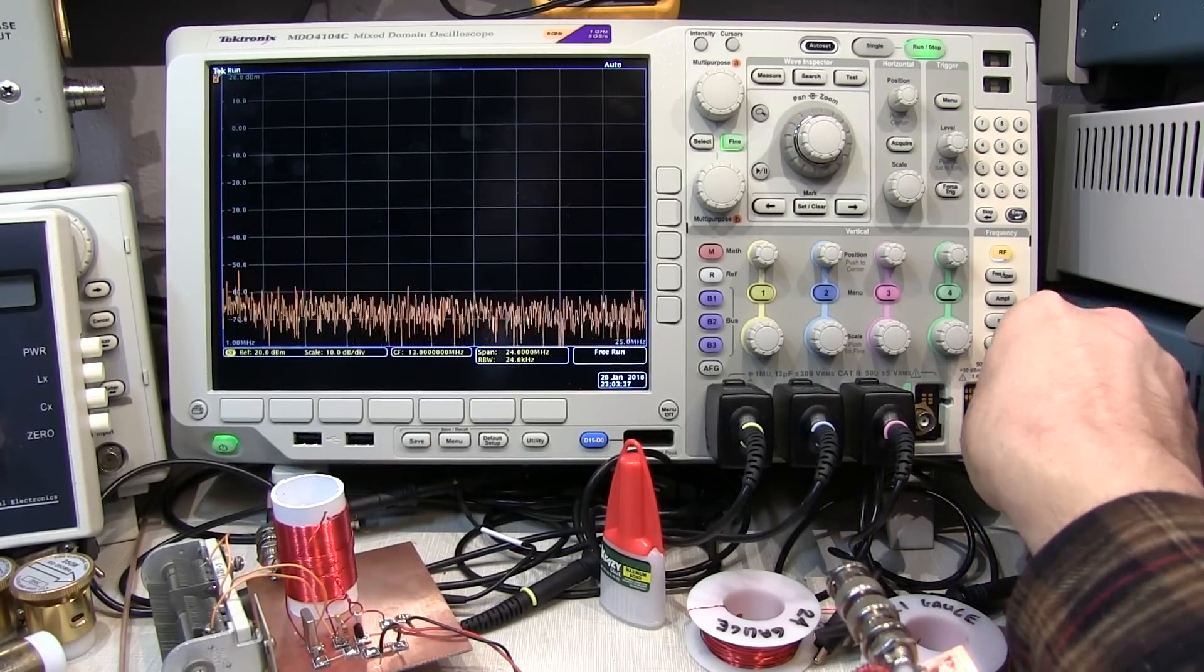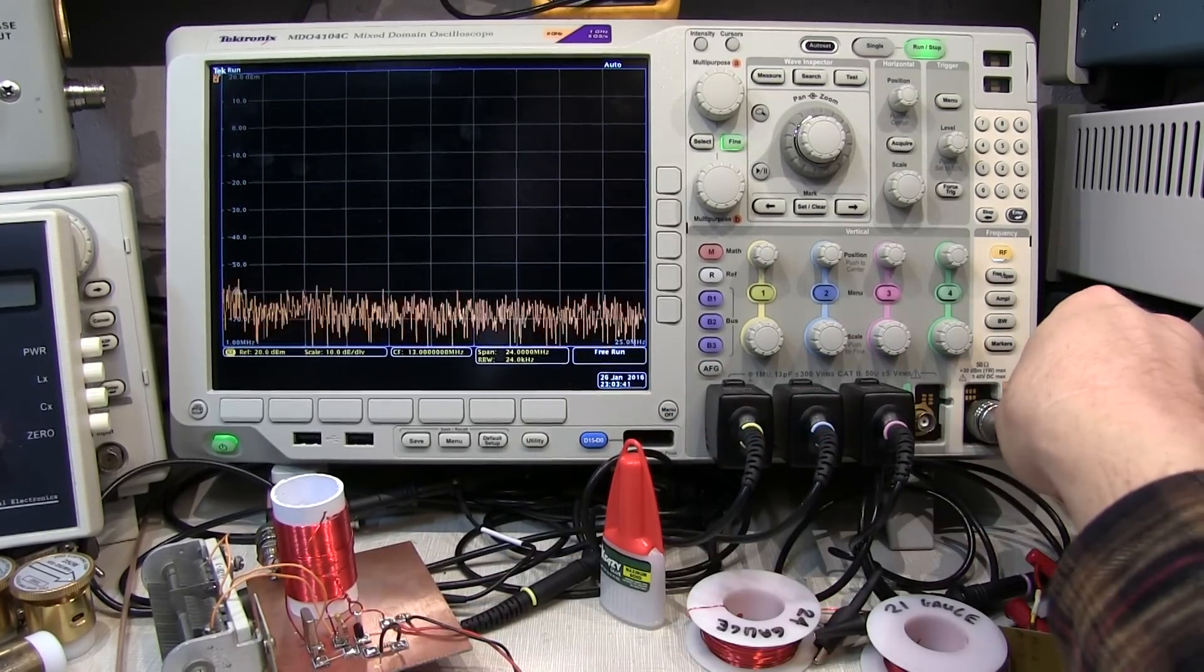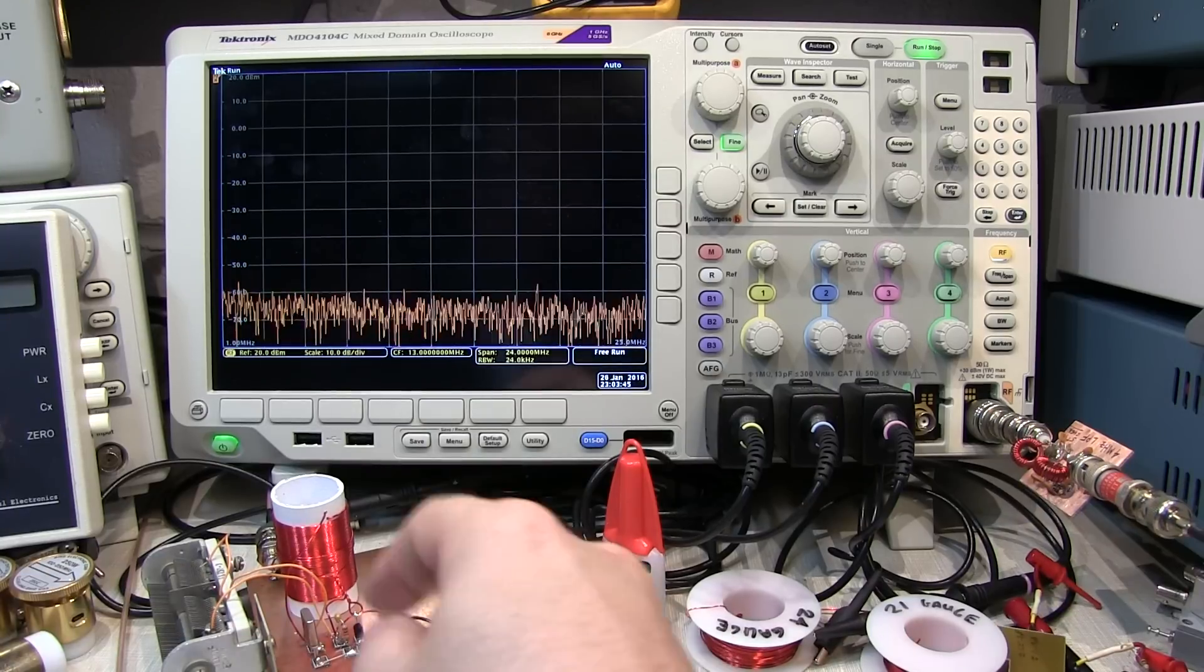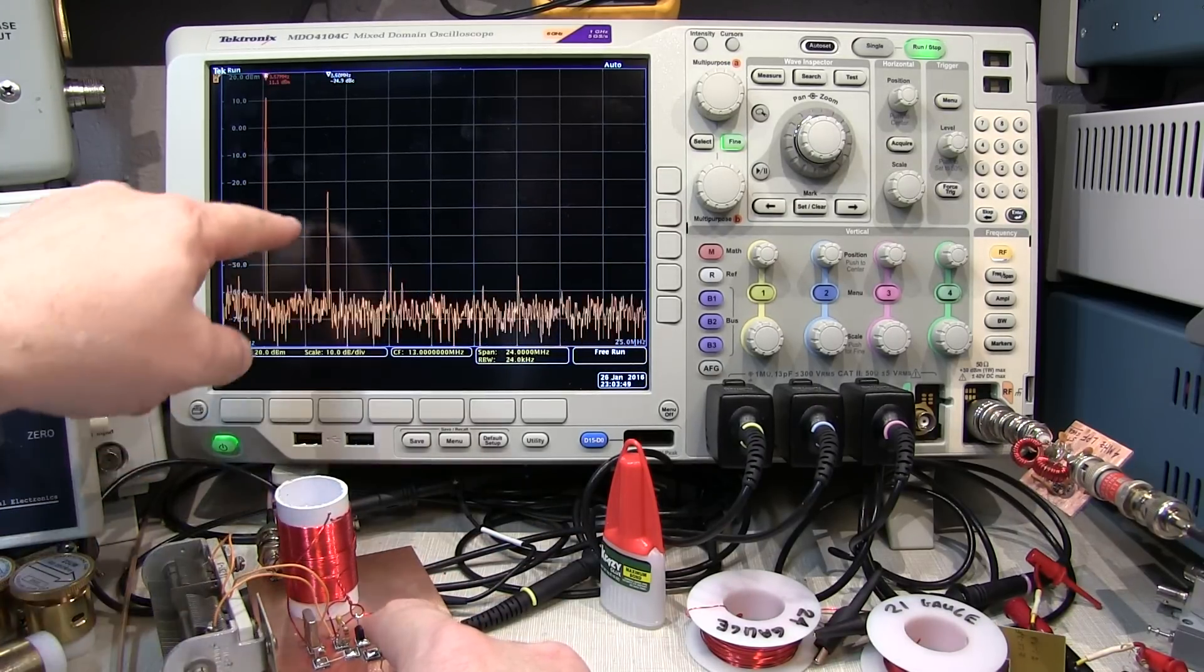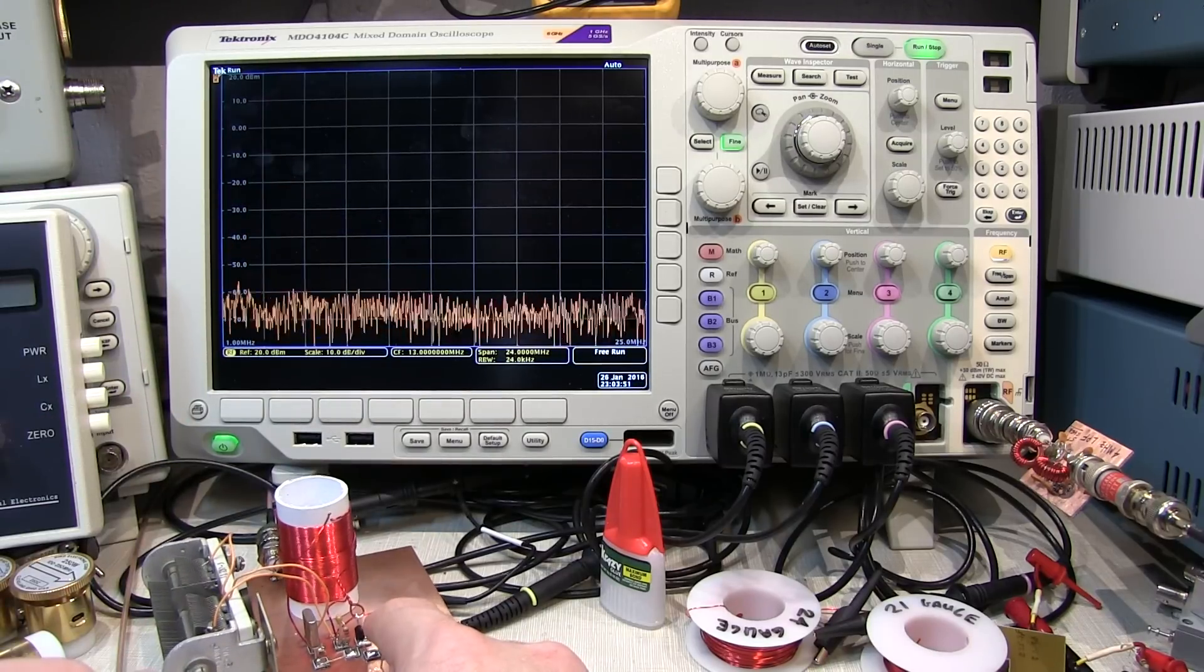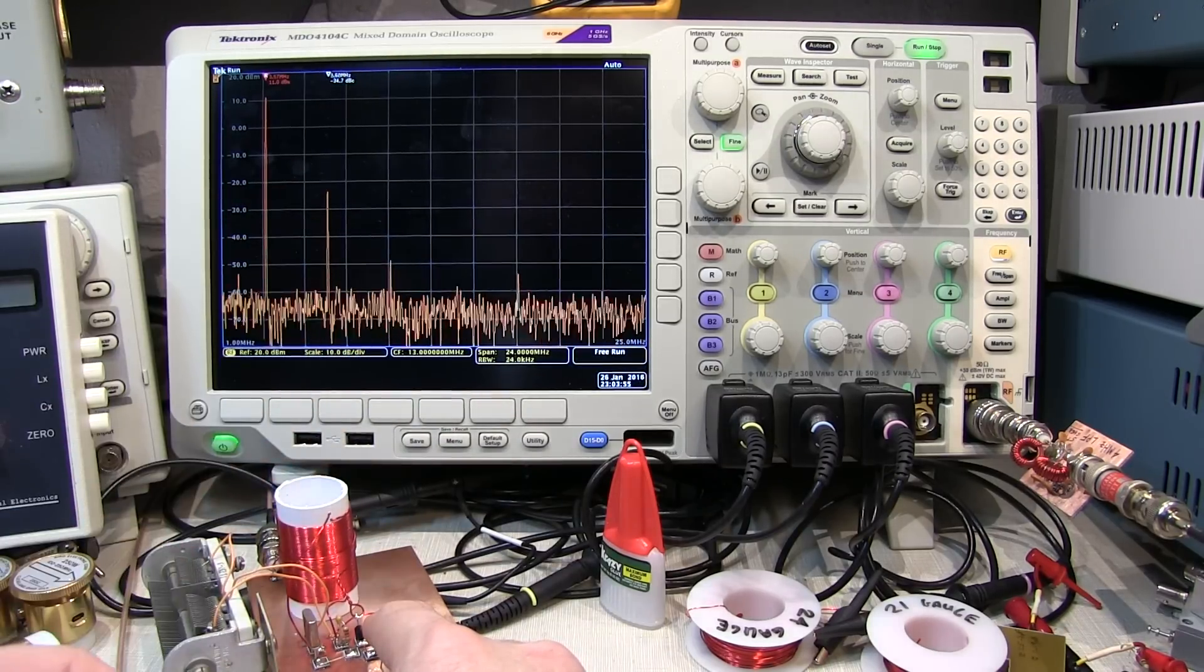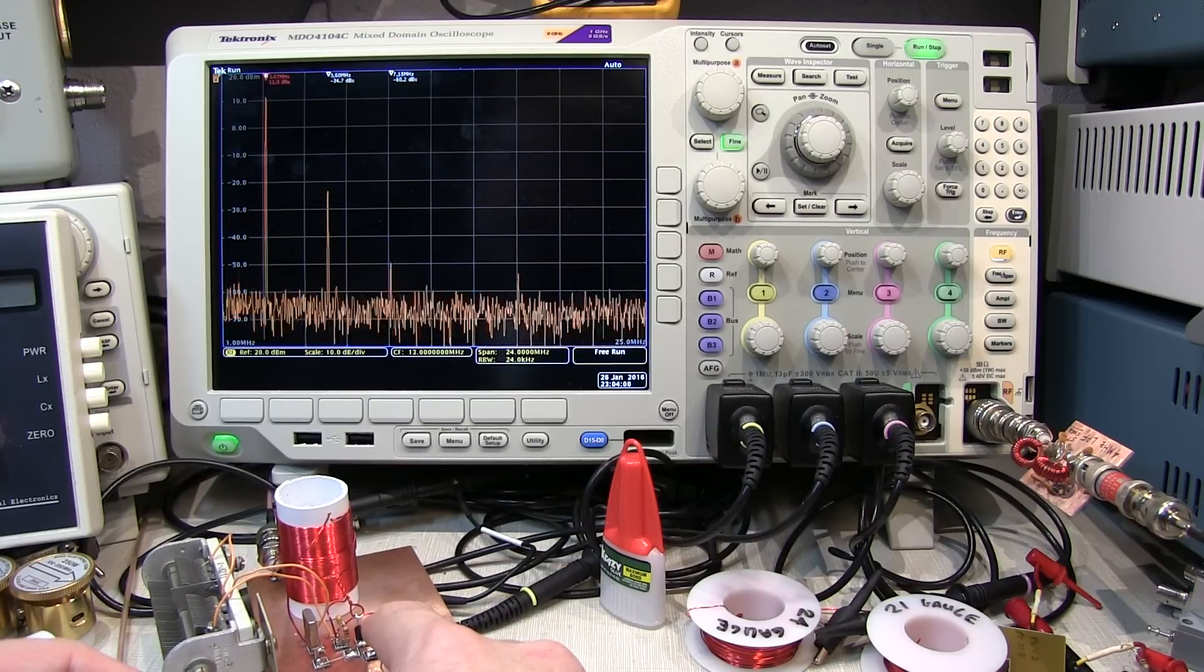All right, so let's stick the low-pass filter in line here with the spectrum analyzer to see how well that does in knocking down some of those harmonics. So, now if we take a look, our second harmonic is now 35 dB down, and our third harmonic is way down here, probably more than 40 dB down. So, the filter does a pretty good job in knocking them down.